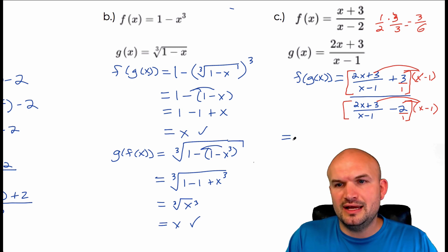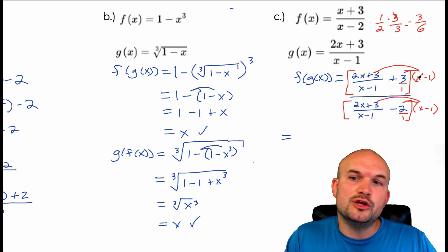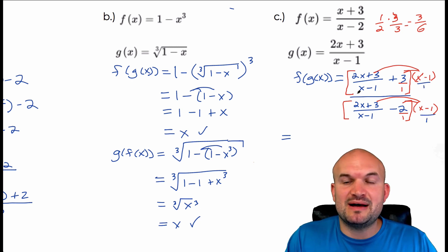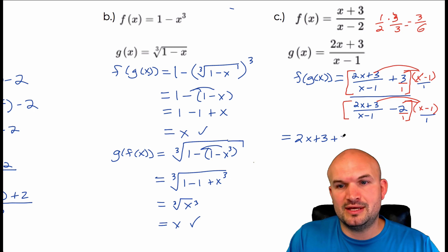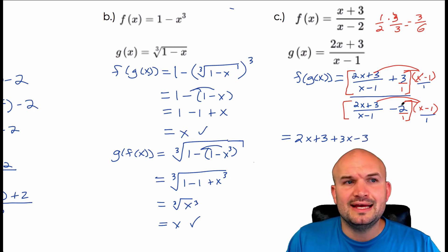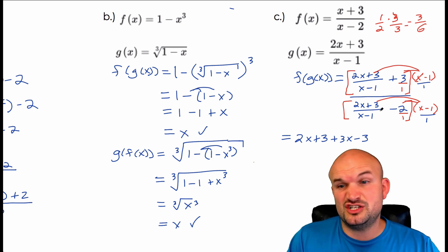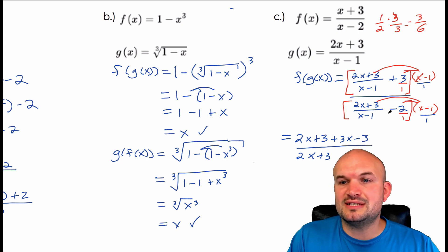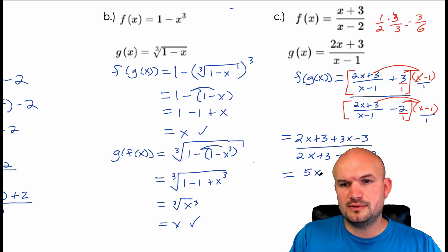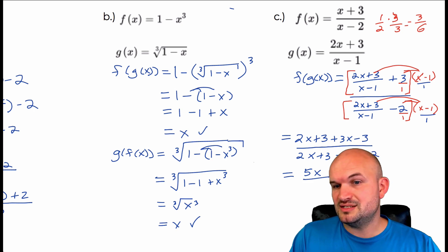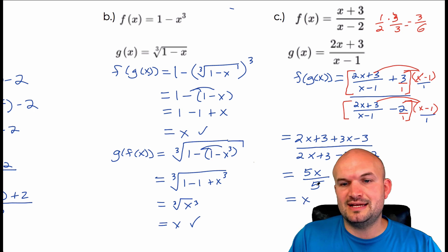When I multiply x minus 1 times the fraction, the x minus 1 in the numerator and denominator divide to 1, leaving me with 2x plus 3. Then x minus 1 times 3 gives me 3x minus 3 by the distributive property. In the denominator, x minus 1 times the fraction again leaves 2x plus 3. And x minus 1 times negative 2 gives me negative 2x plus 2. Combining like terms: 2x plus 3x is 5x, 3 minus 3 is 0, 2x minus 2x is 0, and 3 plus 2 is 5, giving me the identity element x.